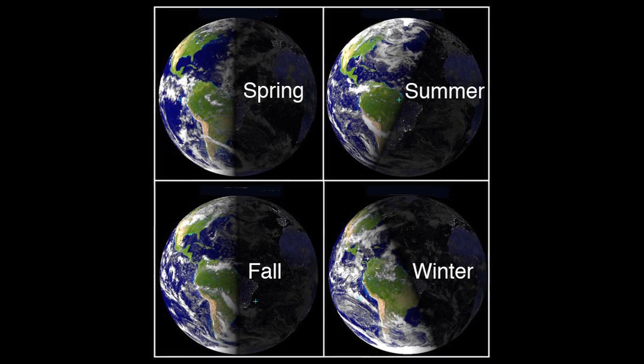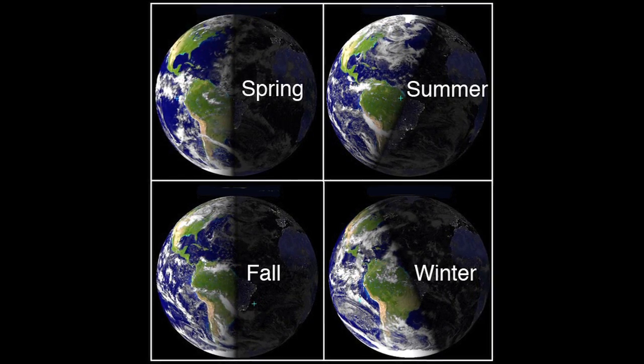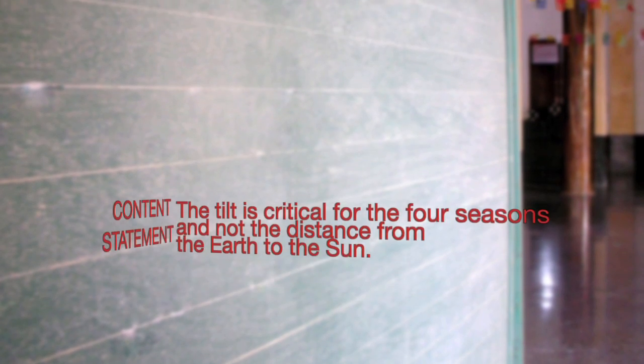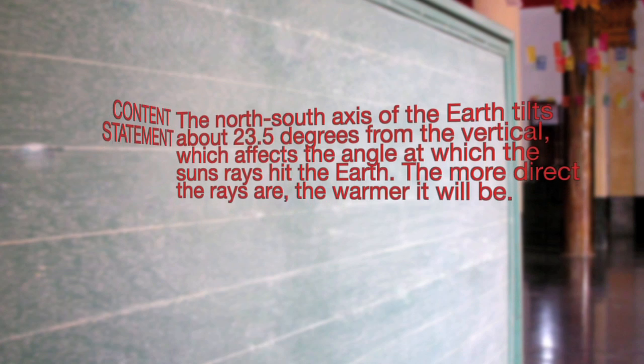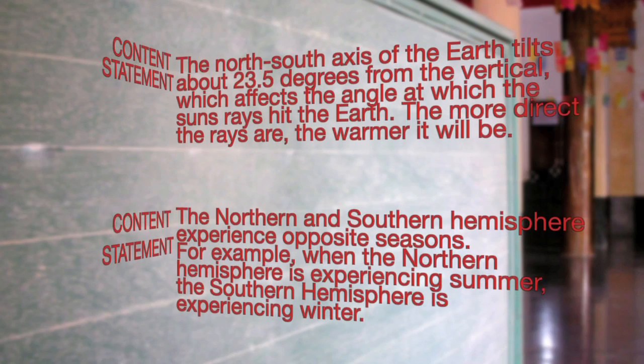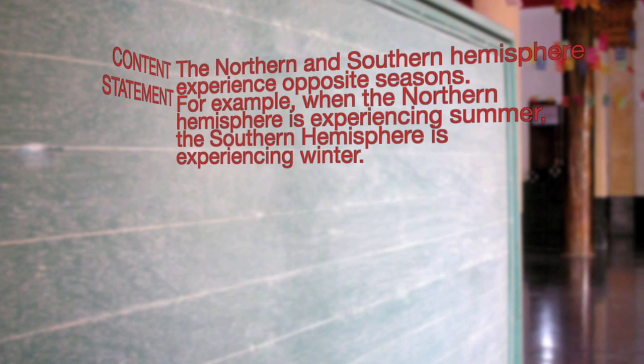Now that you understand the real reason why we have different seasons, let's come up with a few content statements. The tilt is critical for the four seasons and not the distance from the Earth to the sun. The north-south axis of the Earth tilts about 23.5 degrees from the vertical, which affects the angle at which the sun's rays hit the Earth. The more direct the rays are, the warmer it will be. The northern and southern hemispheres experience opposite seasons. For example, when the northern hemisphere is experiencing summer, the southern hemisphere is experiencing winter.